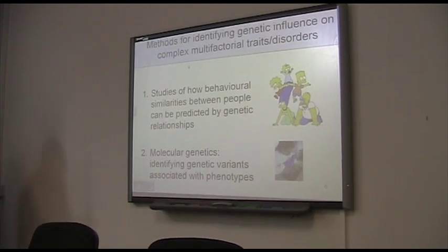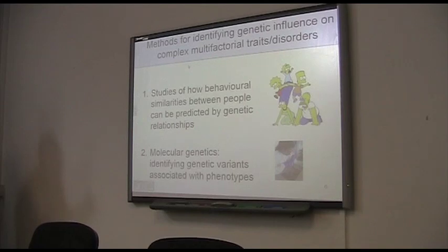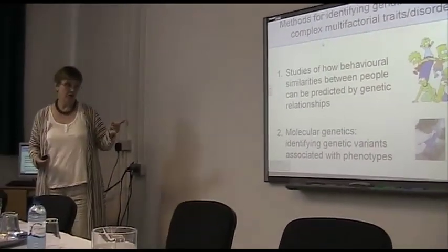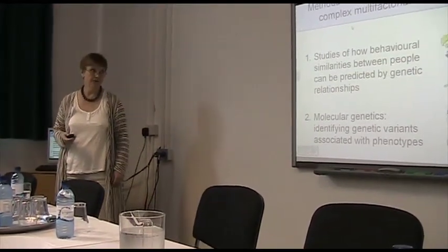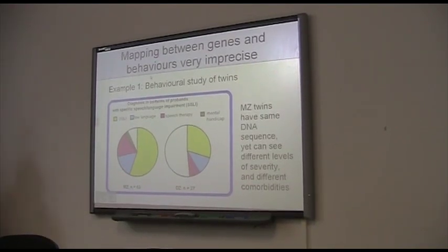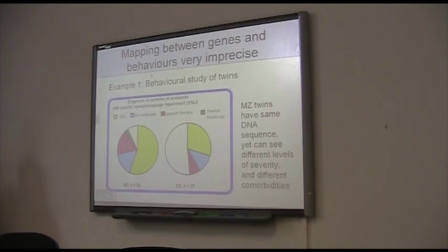How do we, therefore, find the genetic causes of these sorts of things, given that we're talking about lots of genes of small effect? Well, to establish that there is a genetic influence and how big it might be, you can do studies looking at relatives such as twins, to see how far behavioural similarities between people relate to their genetic similarity. The other thing you can do is get into the lab and do molecular genetics — peering down the microscope, looking for bits of genes that are associated with language disorders. But the mapping is incredibly imprecise, and this is why this is not really particularly useful.